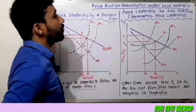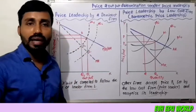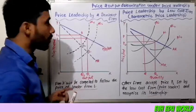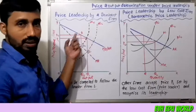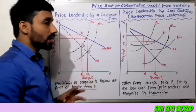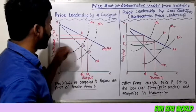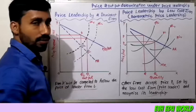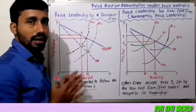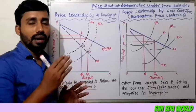This is price leadership by a low cost firm and barometric price leadership. Here, MCF is the marginal cost of followers, MCL is the marginal cost of the large firm, AR is average revenue, and MR is marginal revenue. MCF equals E2, and MCL equals E1. The equilibrium of the large firm equals E2, and followers are equal to the large firm because the price is higher.